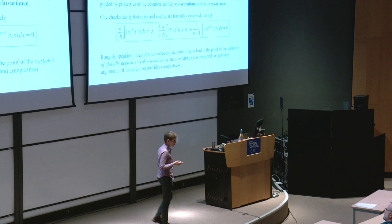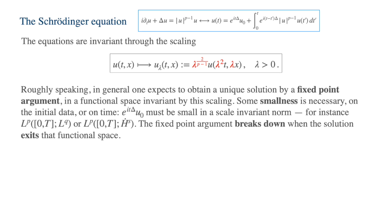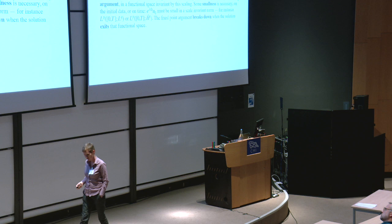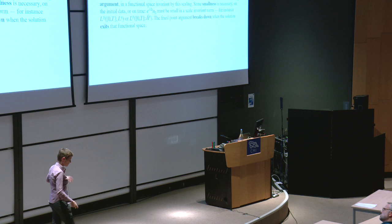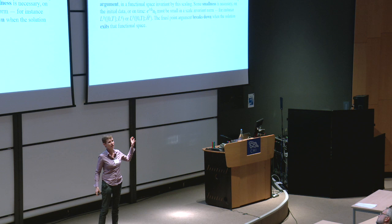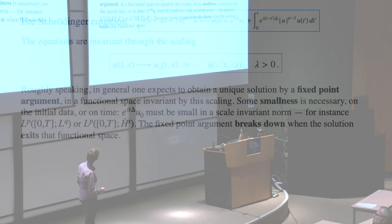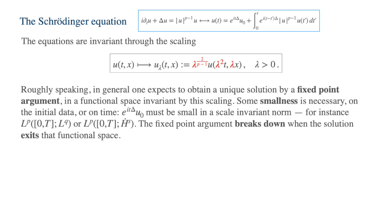Another way of solving the problem is writing your equation as a fixed point. You replace the PDE by an integral formula using the Schrödinger group, and you look for a fixed point of that map. One thing to notice: if you change your U into U_lambda with the powers shown in red, the equation doesn't see the lambda. So the equation is scaling invariant — there is one unique scaling for your equation. If you substitute U_lambda, all lambdas disappear.